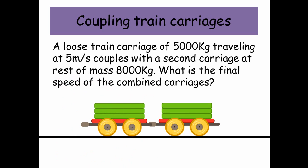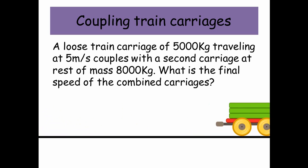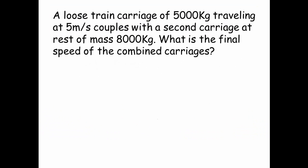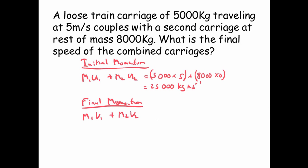Last example. A loose train carriage of 5,000 kilograms traveling at 5 meters per second couples with a second carriage at rest of mass 8,000 kilograms. What's the final speed of the combined carriages? So our little carriage comes in and then couples up together and then they move off. The initial momentum is M1U1 plus M2U2, and that's equal to 5,000 times by 5 plus 8,000 times 0. Remember, the second carriage is just there at rest. So we get a total momentum of 25,000 kilogram meters per second.